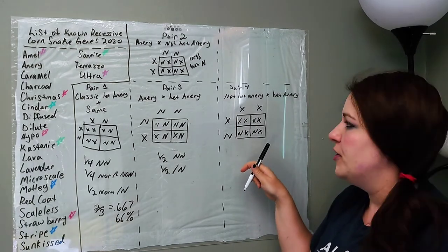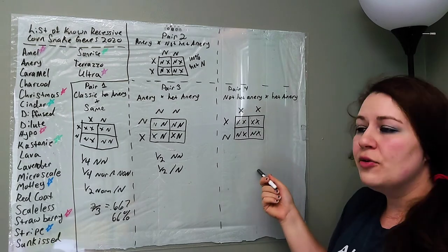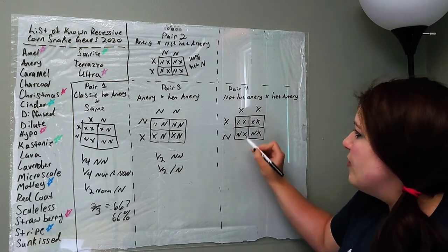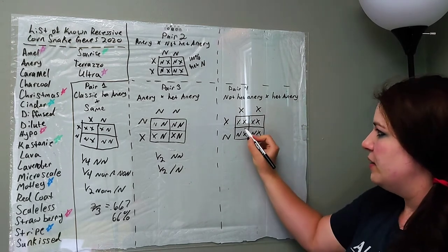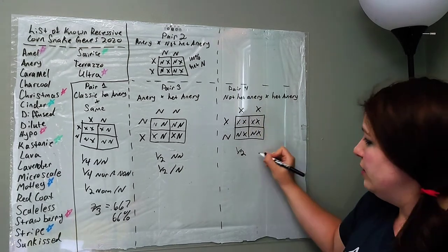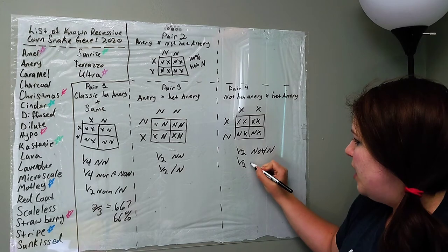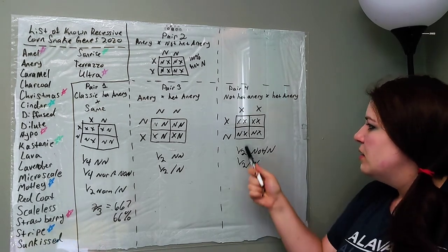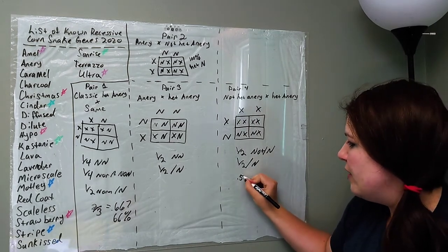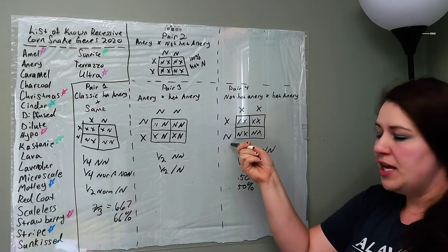We're going to go ahead and do a pair four, which is a little bit different than the others. This is a not het anery to a het anery. And this is going to teach you how to do the other percentage that's really common, the 50% possibly het. So I've already done the square for us. I'm just going to write down, so we have half here that are no anery at all. So not het anery. And then we have half that are het anery. Half het anery. This just means, so if you divide one by two, you all probably know it's going to be 0.5, 0.50 or 50%.